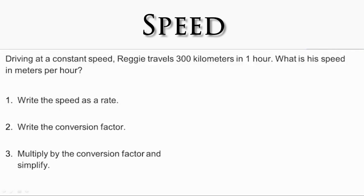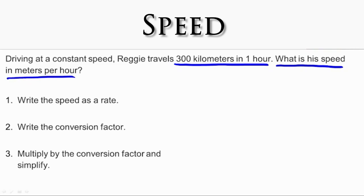Let's explore the strategy of converting speed. Remember Reggie? You found out earlier in your lesson that he was driving at a speed of 300 kilometers per hour. We're trying to figure out what his speed is in meters per hour. You previously wrote this speed as a unit rate, but this problem is asking for different units than the units given. You need to convert from kilometers per hour to meters per hour. In order to do this conversion, we're going to need a conversion factor.